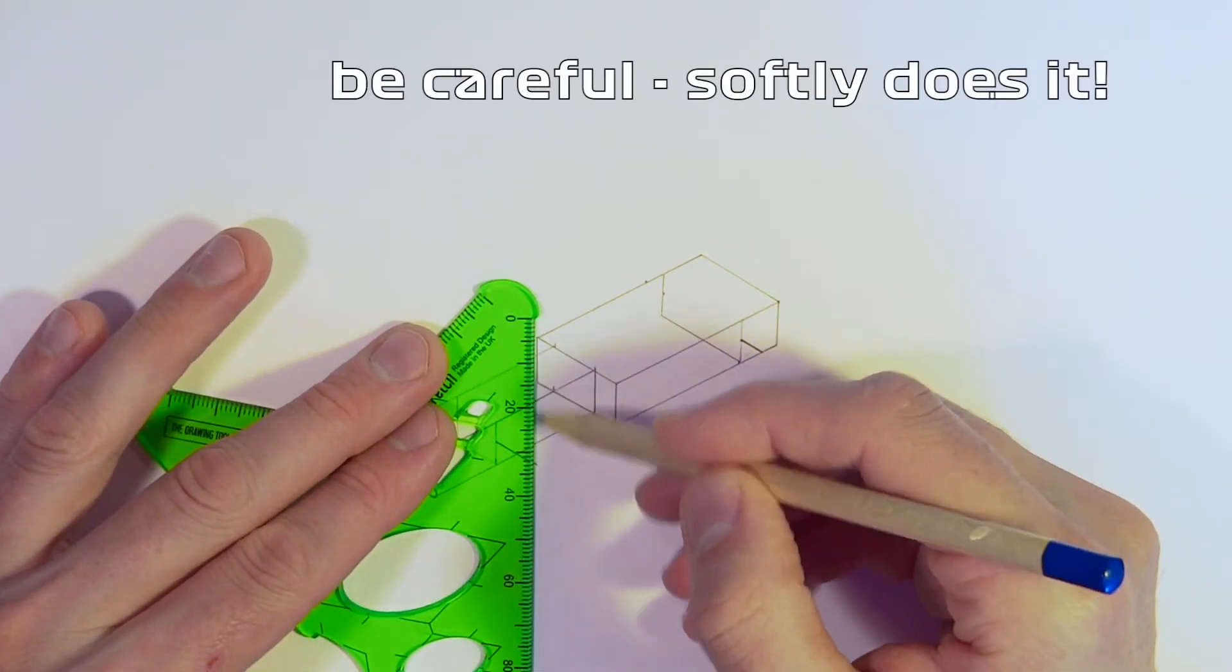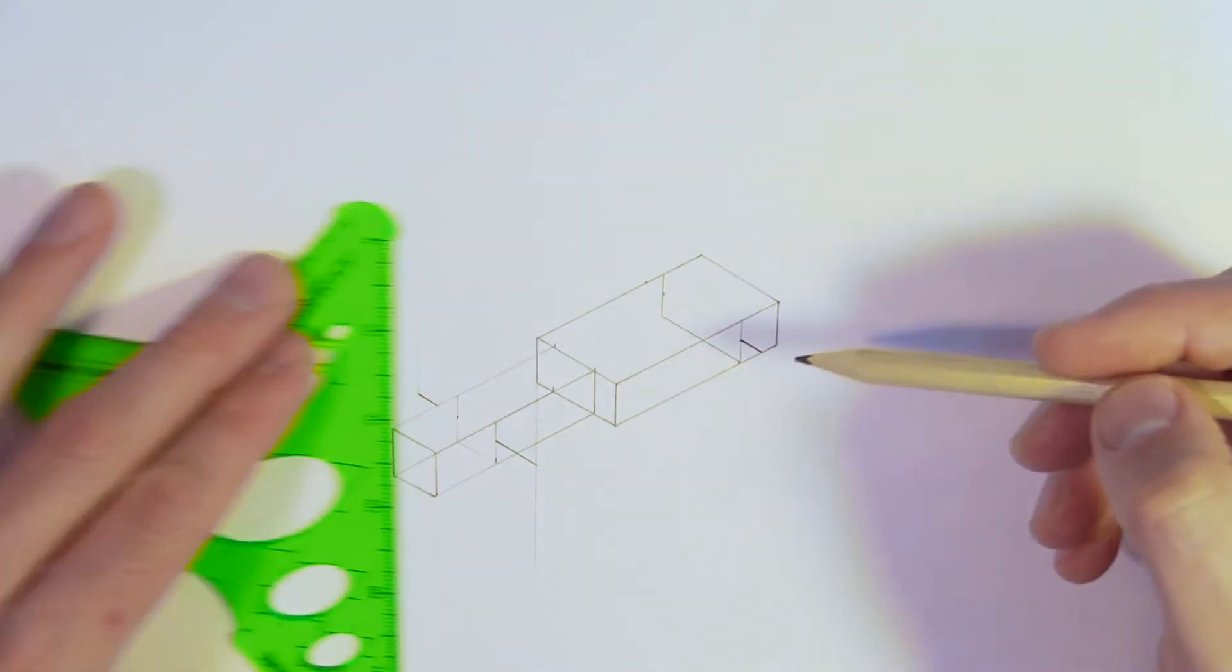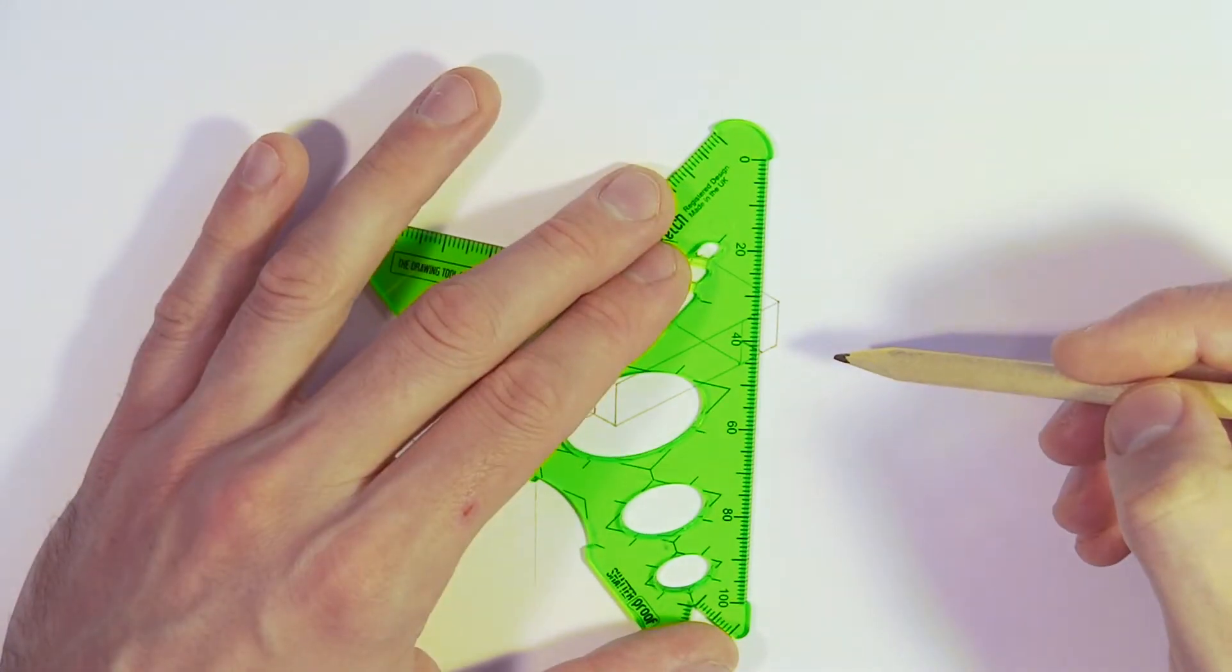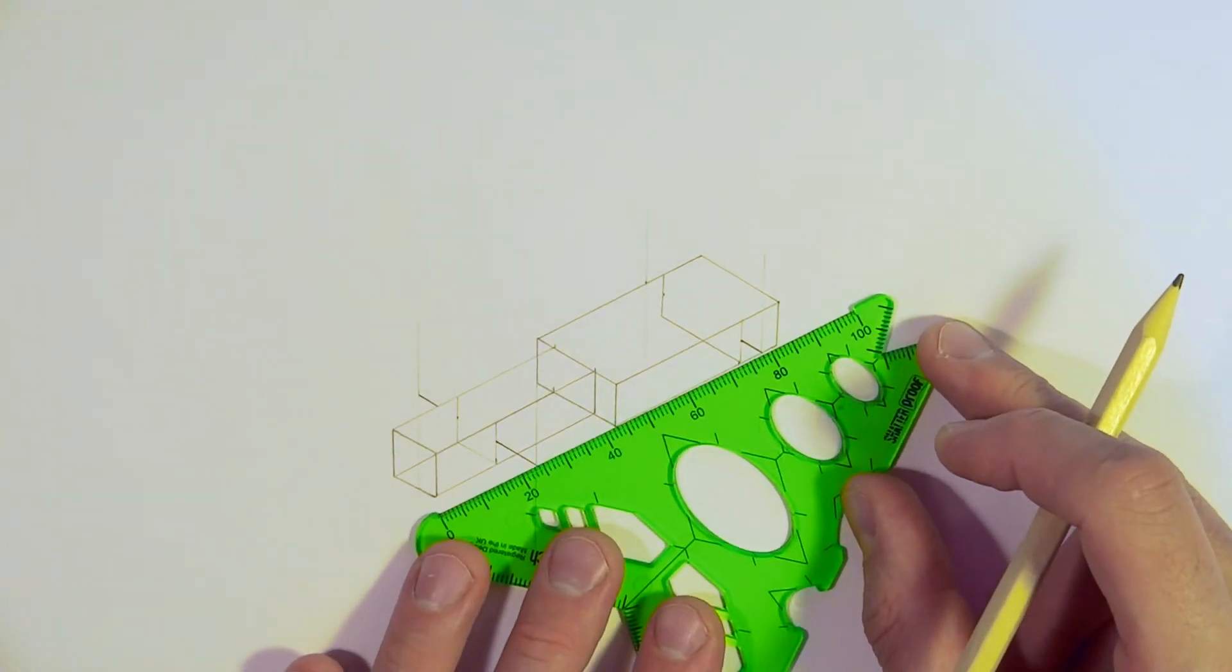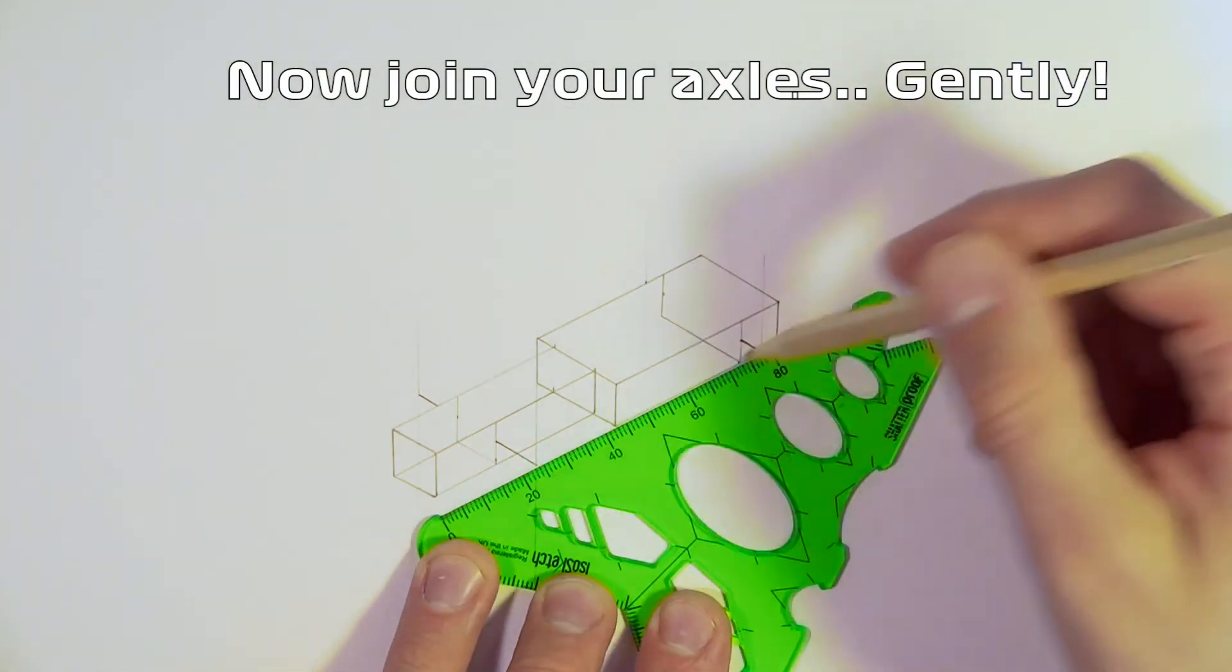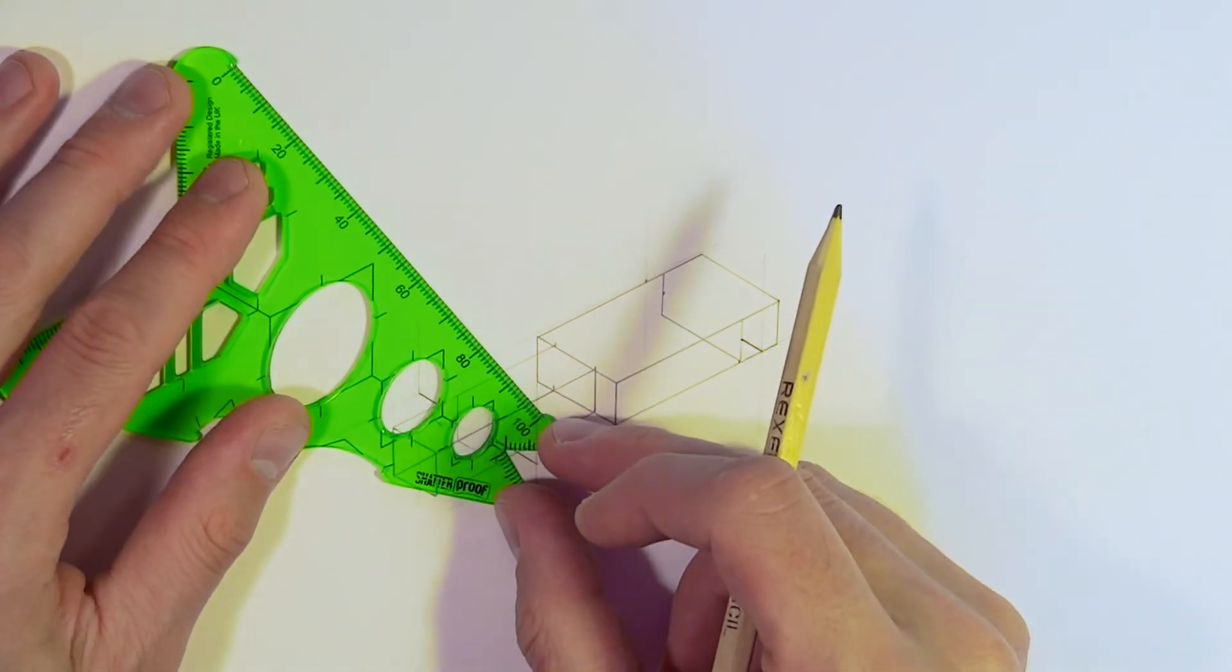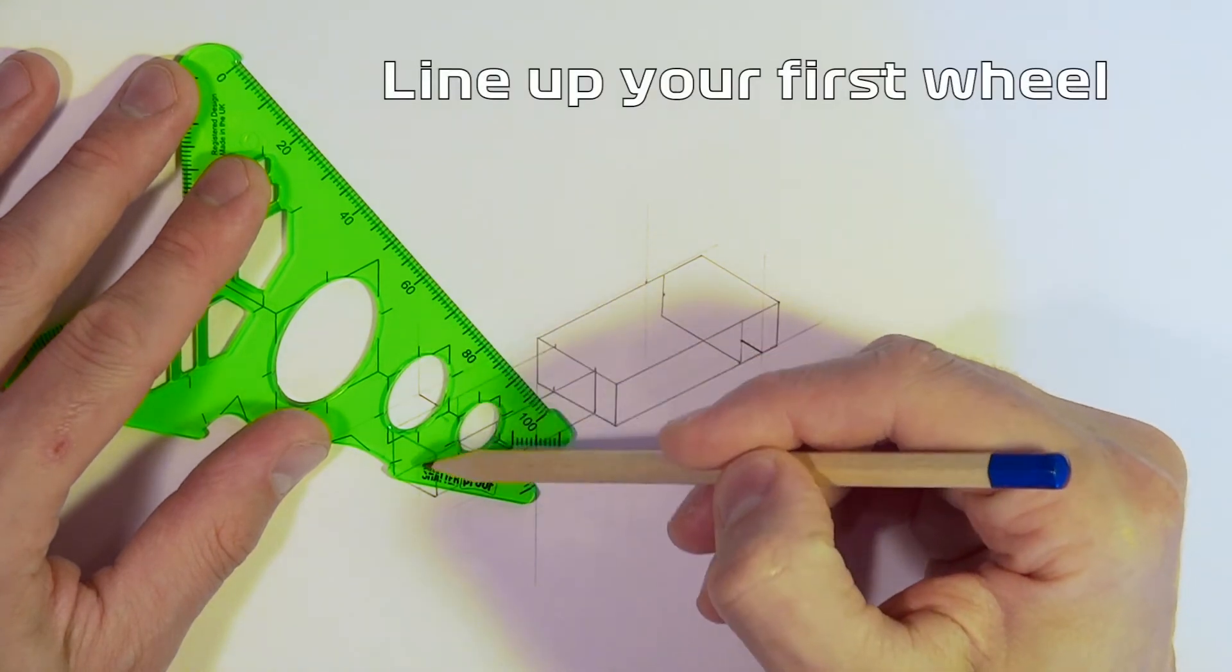Now all that's left to do is mark on where our wheels are going to go. So just gently with the pencil, I'm going to mark on a vertical line. Vertical means it goes from top to bottom on the page, so I'm going to go a vertical line, just being careful to make sure that that line is straight up and down. Now I'm going to mark across in line with the drawing, so again parallel with the rest of the drawing, marking a line across where we've just drawn.